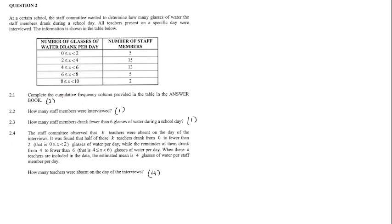Question 2.1. Complete the cumulative frequency column provided in the table in the answer book. So I'm just going to do it here, cumulative frequency. So our first number obviously would be the same, 5. We would then add our next number to the 5, making it 20. We would then add 13 to the 20, making it 33. The same with the 5, making it 38. And the same with the 2, making it 40.